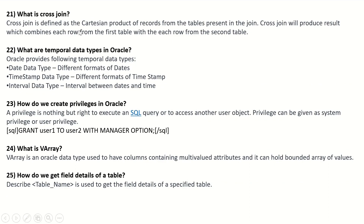What is a cross join? Cross join is defined as the Cartesian product of the records from the tables present in the join. A cross join produces results that combine each row from the first table with each row from the second table. What are the temporal data types in Oracle? Oracle provides: DATE data type for different date formats, TIMESTAMP data type for different timestamp formats, and INTERVAL data type for intervals between dates and times.